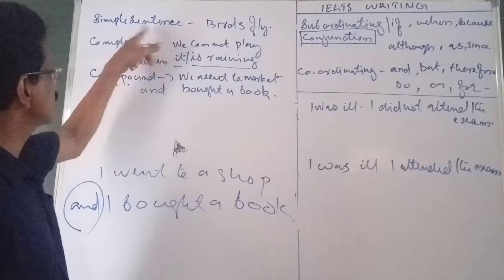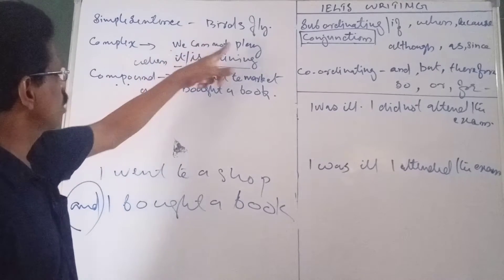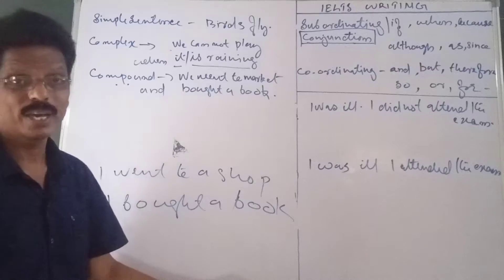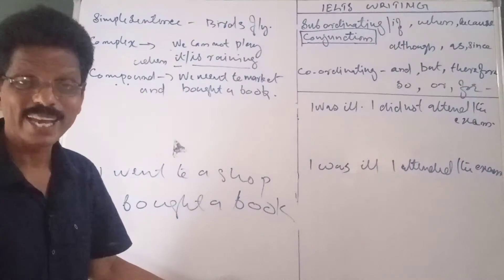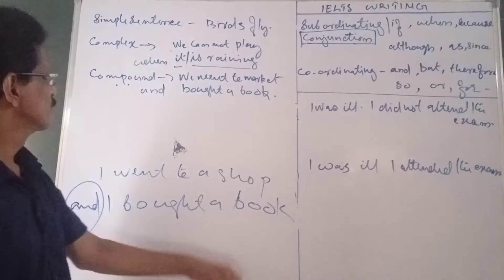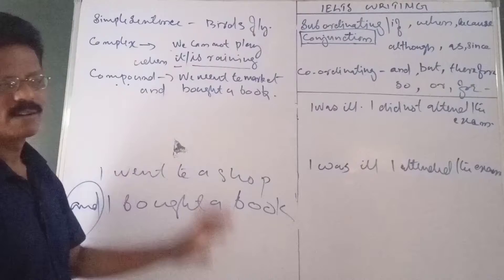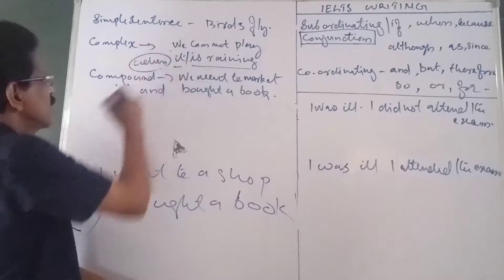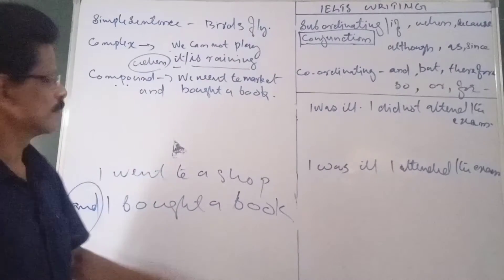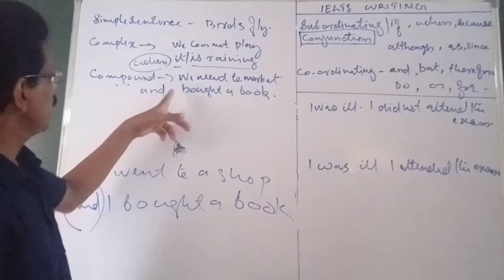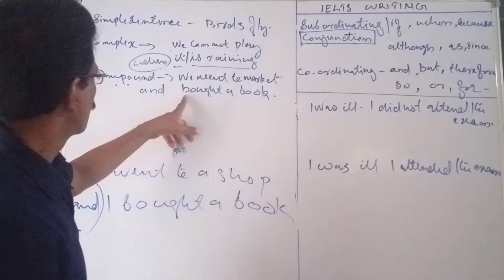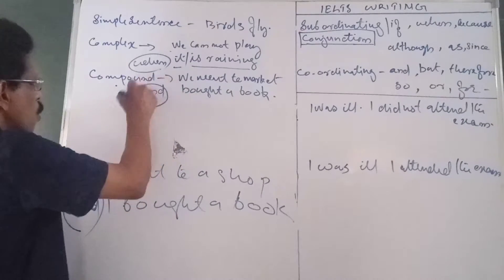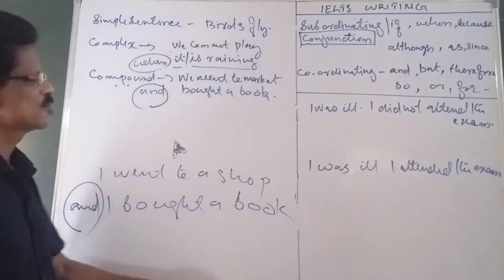Then, for complex — example: 'We cannot play when it is raining.' 'When' is the subordinating conjunction. For compound: 'We went to market and bought a book.' 'And' is a co-ordinating conjunction.